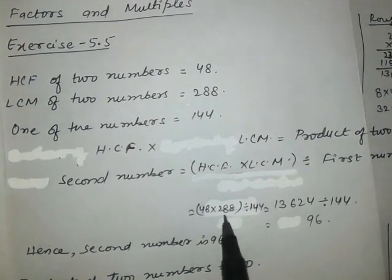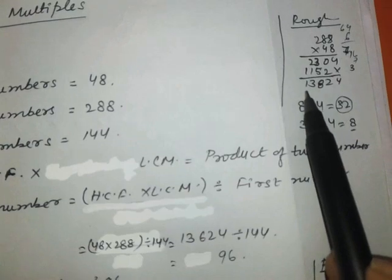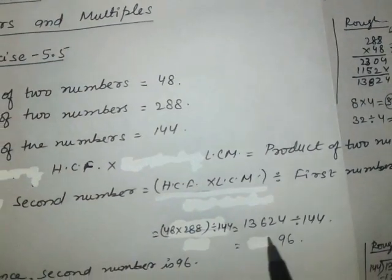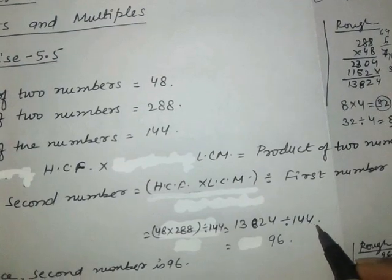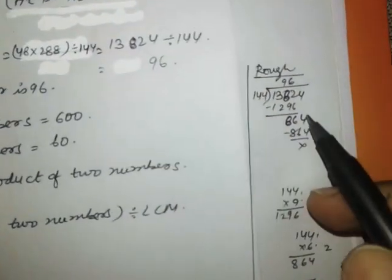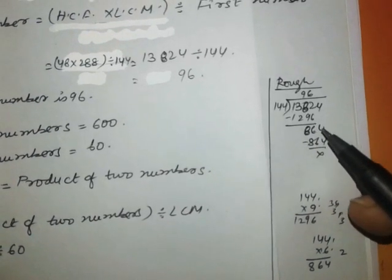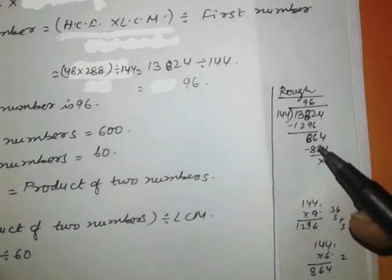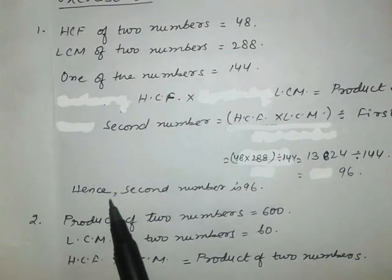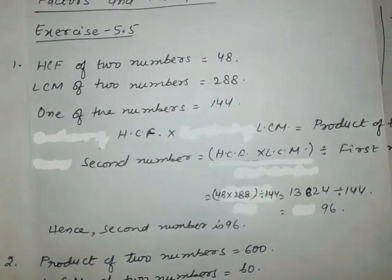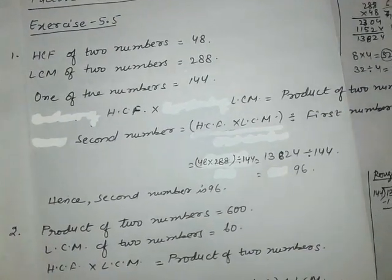We multiply 48 × 288 in rough work and get 13,824. Then 13,824 divided by 144: 144 goes 9 times giving 1296, remainder 528, then 144 × 6 = 864, remainder 0. So the answer is 96. Hence the second number is 96. Remember, when solving word problems, you must write the language — without language it is not possible to solve word problems.